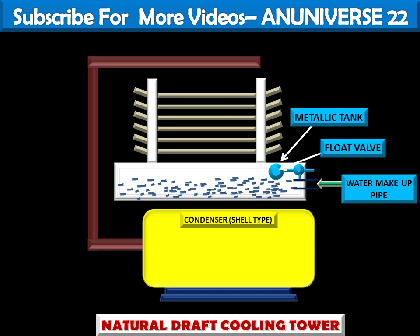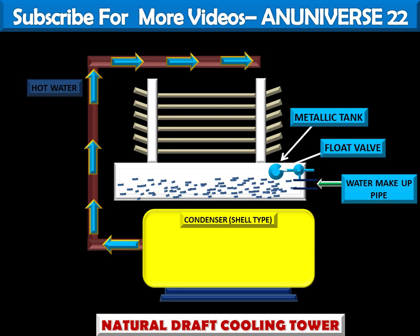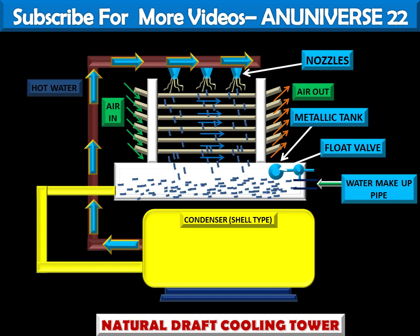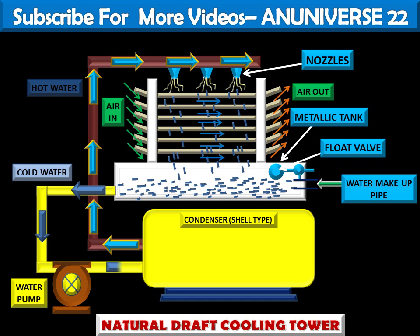This is the pipe connection. From the condenser, hot water is supplied to the spray header. From the spray header, water passes through the spray nozzles and falls into the metallic tank in the form of fine droplets. Air enters into the tower from the sides, passes through the water droplets, and exits out. The cooled water is then supplied back to the condenser with the help of a water pump.